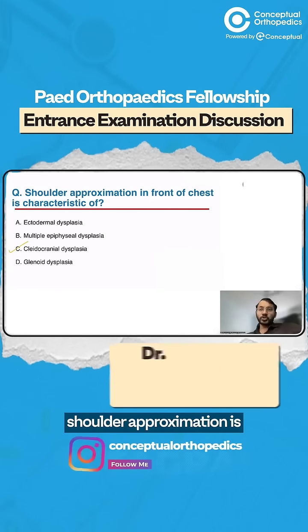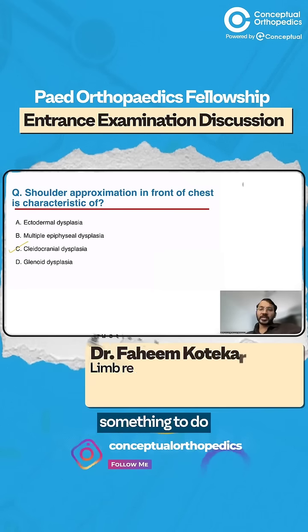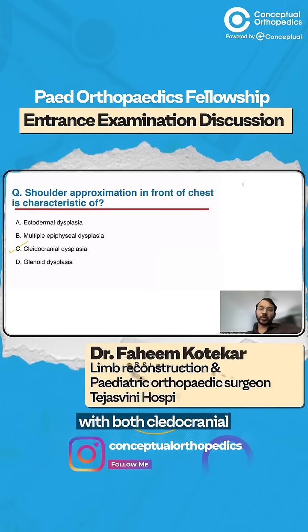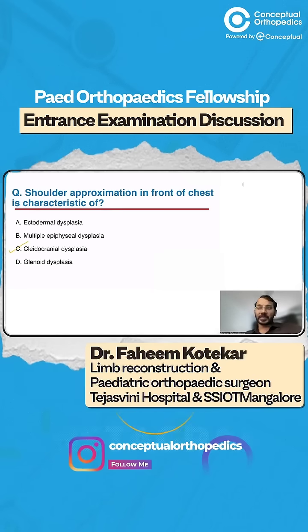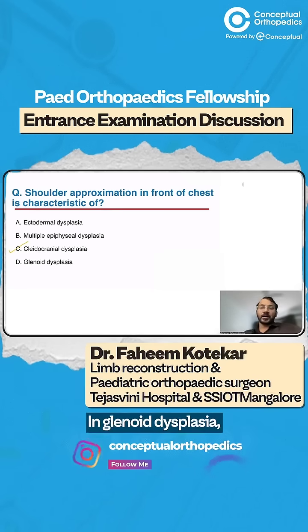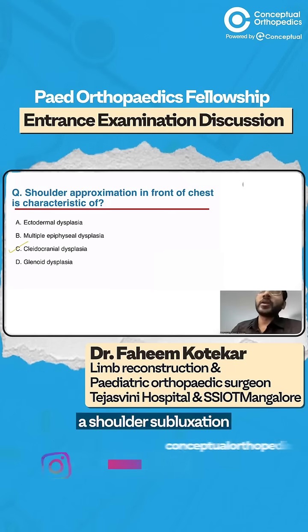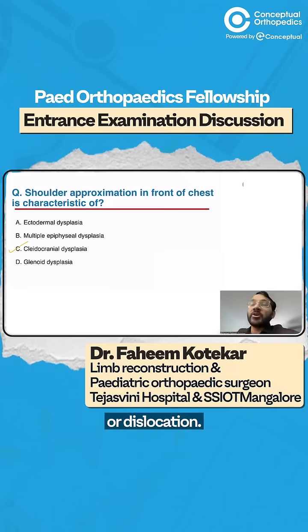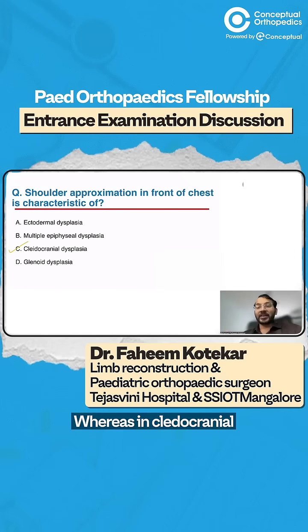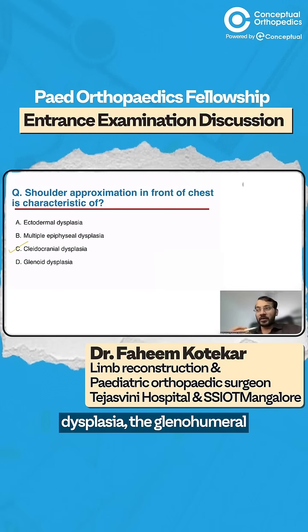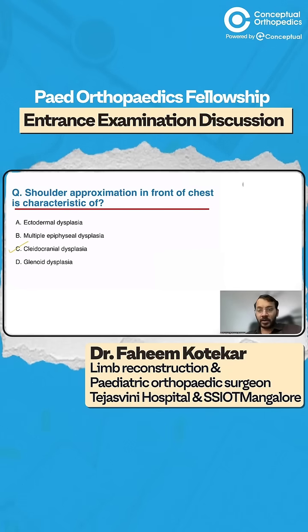Shoulder approximation is related to both cleidocranial and glenoid dysplasia. In glenoid dysplasia, there will be shoulder subluxation or dislocation. Whereas in cleidocranial dysplasia, the glenohumeral joint is normal, but the clavicle is absent, which allows both shoulders to be approximated in front of the chest.